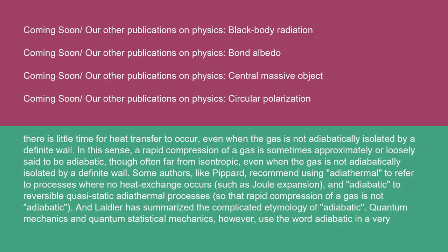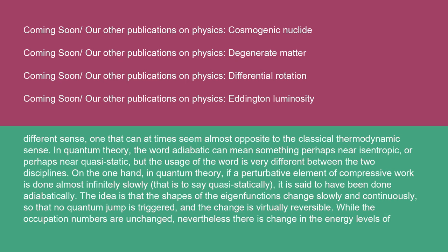Quantum mechanics and quantum statistical mechanics use the word adiabatic in a very different sense — one that can at times seem almost opposite to the classical thermodynamic sense. In quantum theory, the word adiabatic can mean something near isentropic or near quasi-static. If a perturbative element of compressive work is done almost infinitely slowly (quasi-statically), it is said to have been done adiabatically. The idea is that the shapes of the eigenfunctions change slowly and continuously, so that no quantum jump is triggered and the change is virtually reversible, while the occupation numbers are unchanged — nevertheless there is change in the energy levels of one-to-one corresponding pre- and post-compression eigenstates.